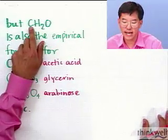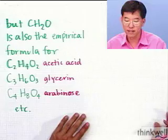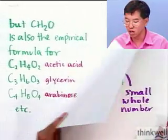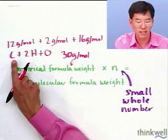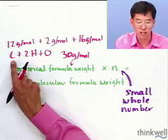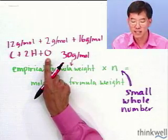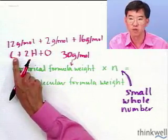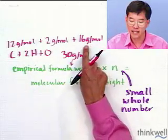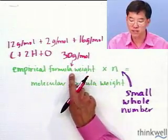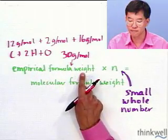The empirical formula weight is the molar mass of CH2O, which is 30 grams. We have one mole of carbon atoms, two moles of hydrogen atoms, and one mole of oxygen atoms. We add 12 grams, which is the molar mass of carbon, 2 grams for two moles of hydrogen, and 16 grams for oxygen. That gives us 30 grams per mole for the empirical formula weight.